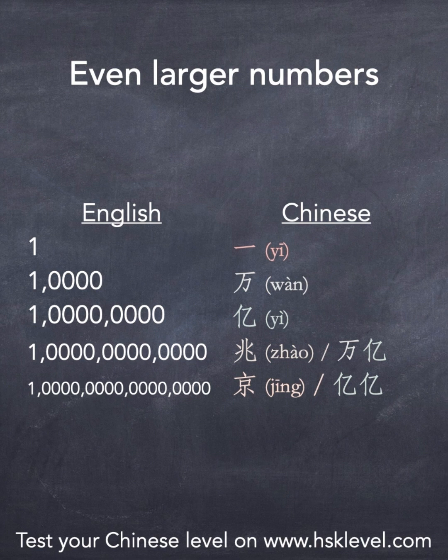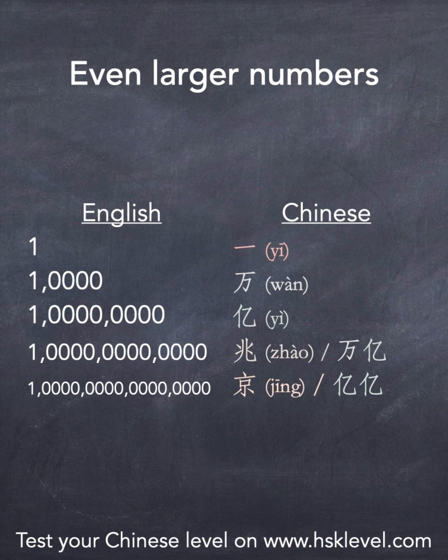When you get to a one with three groups of four zeros, you reach a new character which is zhào. However, in mainland China, people do not use zhào but say wàn yì instead. And if you get to a one with four groups of four zeros, which is ten quadrillions, you need another new character which is jīng. But again, people in mainland China do not use jīng, but say yì yì instead.